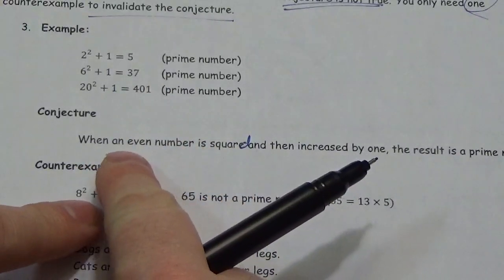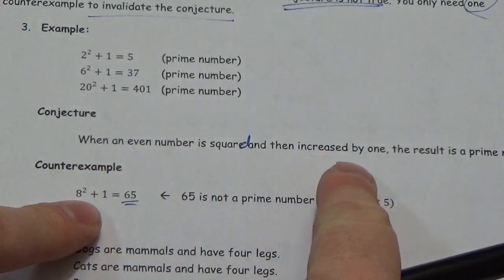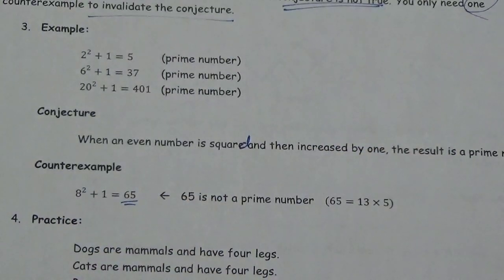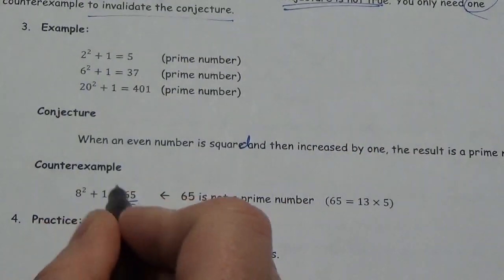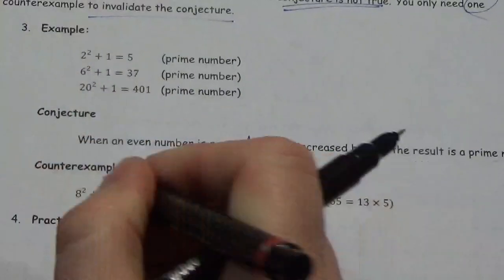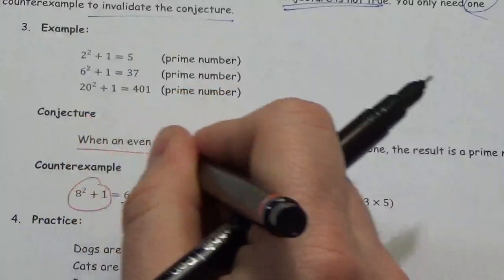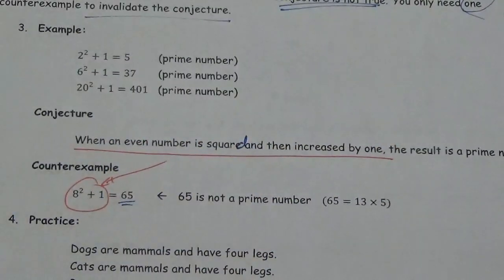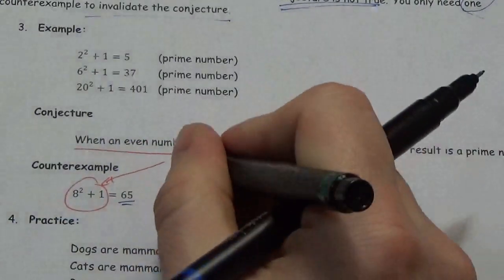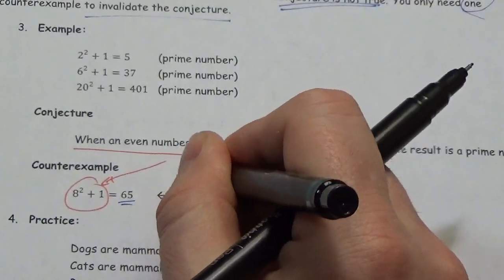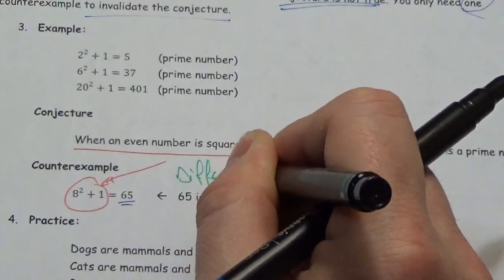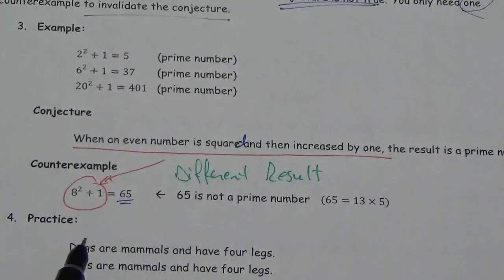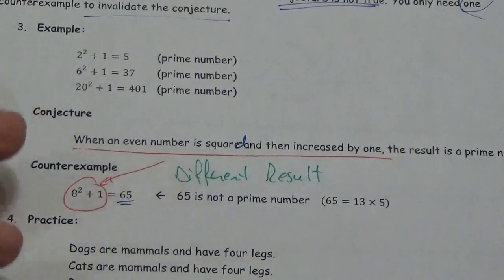I did exactly what I was doing up here. In my conjecture, it just simply says when an even number is squared and then increased by 1. So that's what I did. But the result was not the same. I have to do exactly what the conjecture says. This has to be replicated here with a different result to be a counterexample. Let's take a look at another one here.